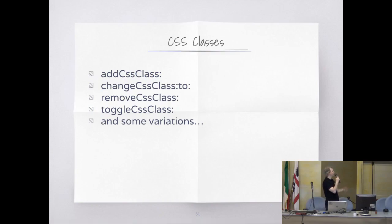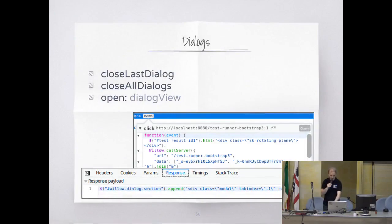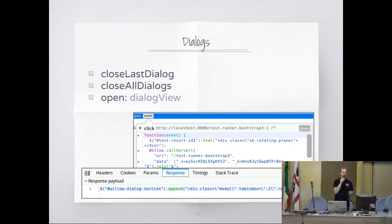There are also affordances to manipulate CSS classes. And there is support for dialogs — the window application will have a special section where dialogs go. When you open one, it goes in that part of the document model. By default, when you close it, it will destroy it.